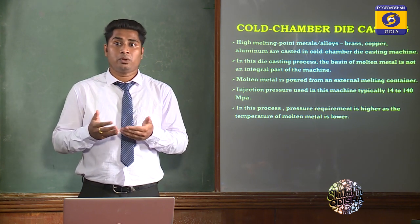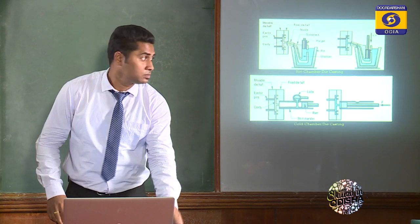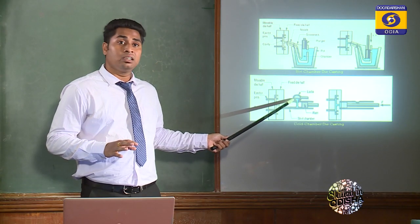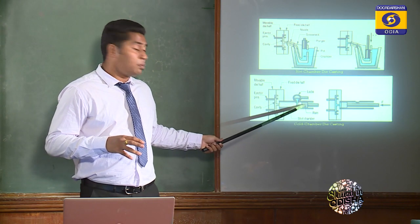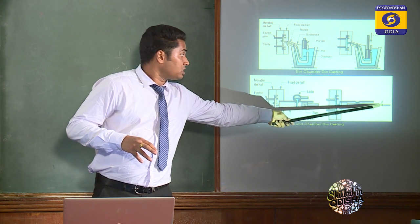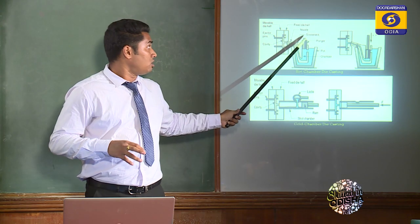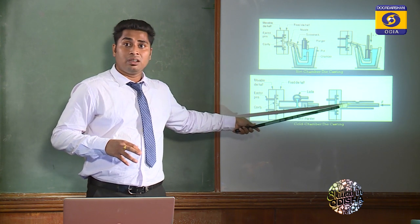Now we will discuss the processing steps in Cold Chamber Die Casting Process. In the Cold Chamber machine, the melting unit is not integral, so an external ladle pours the liquid metal into the machine. The direction of movement of the ram is horizontal — in Hot Chamber the plunger moves downward, but in Cold Chamber the ram moves in the horizontal direction.